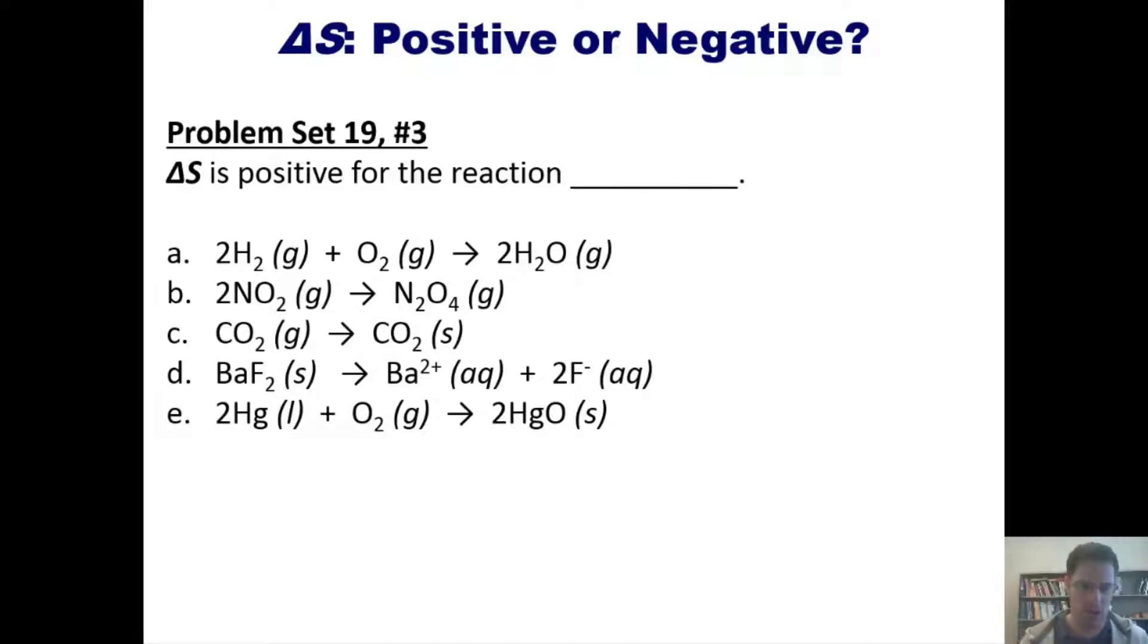I'm not going to answer this for you, but I'll give you some advice. I want you to look at each of these processes and try and ask yourself the question: am I becoming more disordered as I go from left to right? If the answer is yes, then it is a positive delta S. If you're becoming more ordered as you go from left to right or more constrained, then it's a negative delta S.